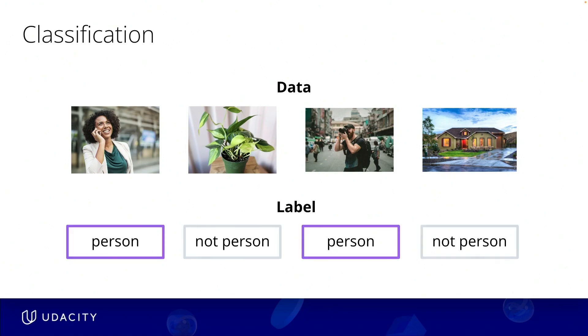In this example, we're only using two categories for the labels: person and not person. But you could have multiple categories. Maybe for this data set, we could have three categories: person, plant, or neither.